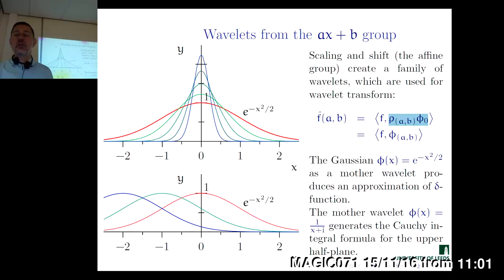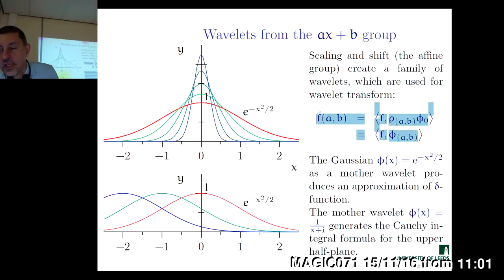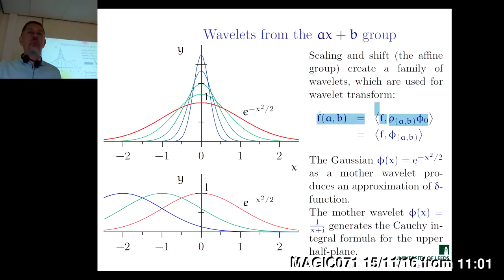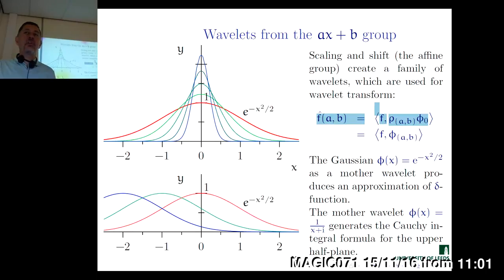That inner product depends on the values of scaling and shift applied, so it becomes a function of A and B. As a result of the wavelet transformation, we obtain a function on the AX+B group. In a sense, that is similar to the decomposition over an orthonormal basis, with the important difference that wavelets altogether are not linearly independent — this is an over-complete system. It allows decomposing an arbitrary signal over that collection of samples.